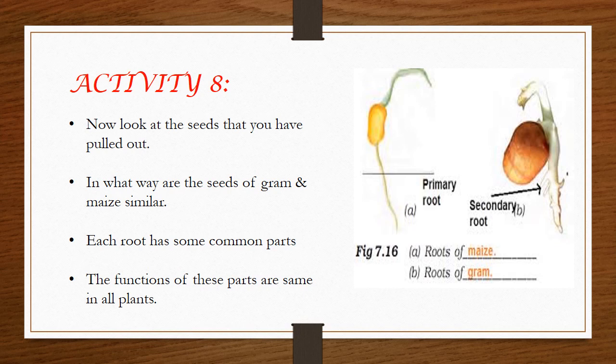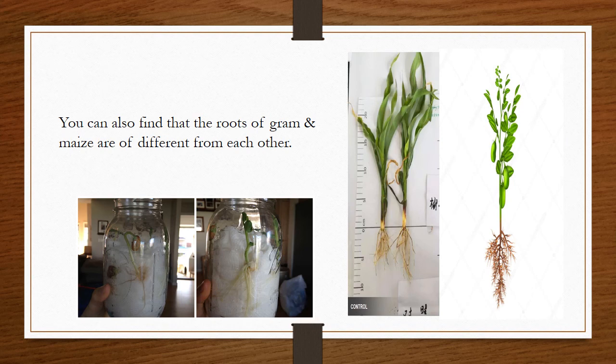The roots of gram and maize are similar in their functions but totally different in appearance. In the case of gram and maize, one root is straight while the other has small branching. There are two types of root systems: the tap root system and the fibrous root system. We will discuss these further in the next classes.